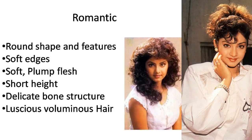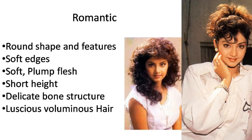Next is Romantic. You have a short height and a round shape overall. Your whole face features have soft edges. Plumpy flesh is all over the body, with a delicate bone structure.